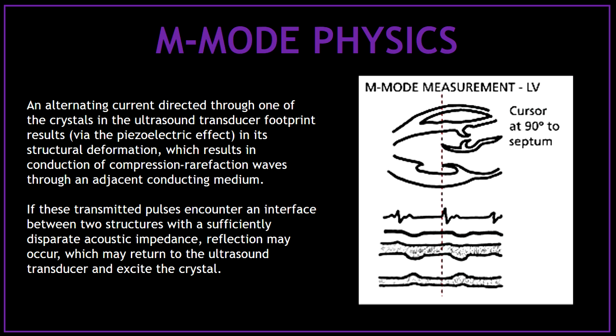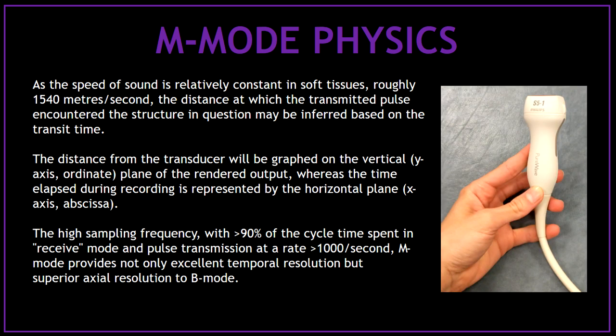An alternating current directed through one of the crystals in the ultrasound transducer footprint results in its structural deformation, which results in conduction of compression-rarefaction waves through an adjacent conducting medium. If these transmitted pulses encounter an interface between two structures, reflection may occur. As the speed of sound is relatively constant in soft tissues — roughly 1,540 meters per second — the distance at which the transmitted pulse encounters the structure in question may be inferred based on the transit time. The distance from the transducer is graphed on the vertical plane, whereas the time elapsed during recording is represented by the horizontal plane.